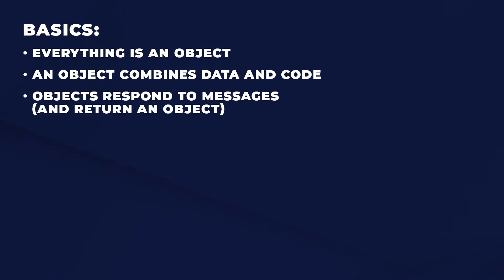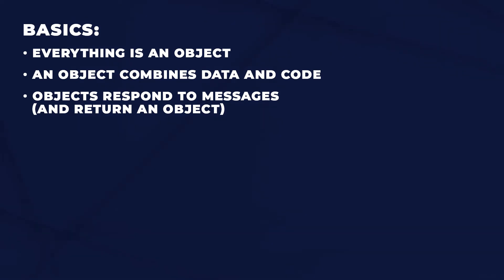Let's start with some of the basics. In Smalltalk, everything is an object — this makes things really consistent. An object combines data and code. How do you interact with an object? You send it a message. We'll see there's three kinds of messages. Whenever you send a message to an object, it responds with an object, even if you're not expecting one — usually the object itself. Whenever you send a message, you get an object in return.